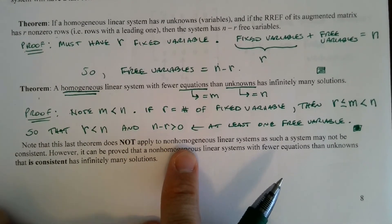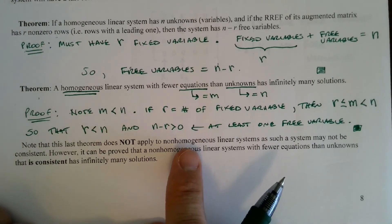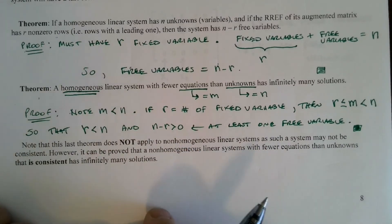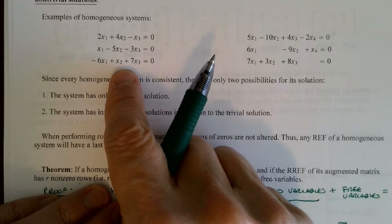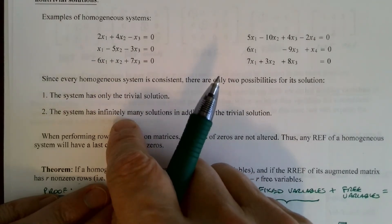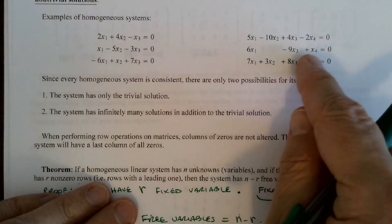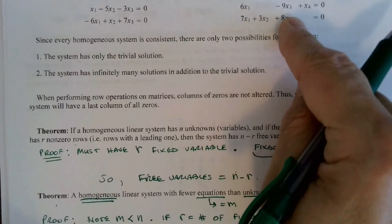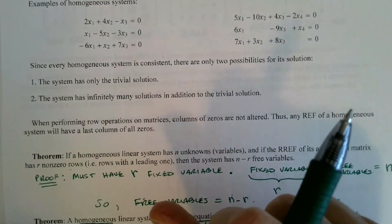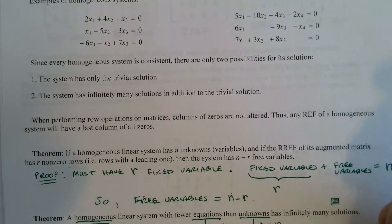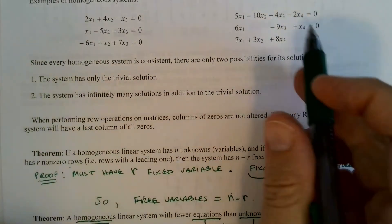This theorem does not apply to non-homogeneous linear systems. If we have fewer equations than unknowns there, the system may not even be consistent — there may be no solution. But if it is consistent, then we can say it has infinitely many solutions. Going back to the two examples: one system has three equations and three unknowns, so it could have only the trivial solution or infinitely many — we can't tell by inspection. But the other system has three equations and four unknowns, so right away we know it has infinitely many solutions. I still don't know the exact form, but I can find it by doing Gaussian or Gauss-Jordan elimination.